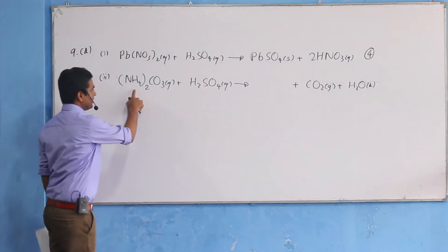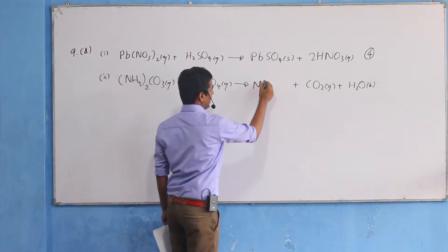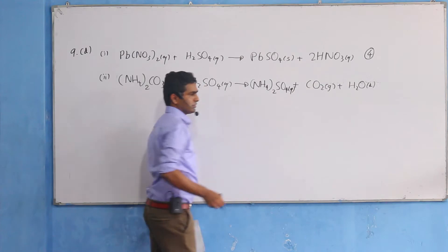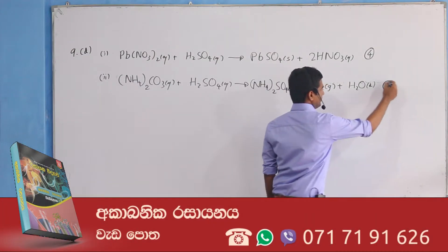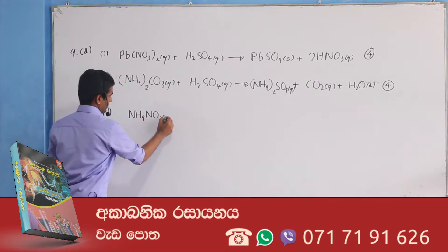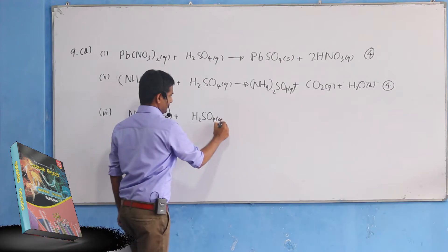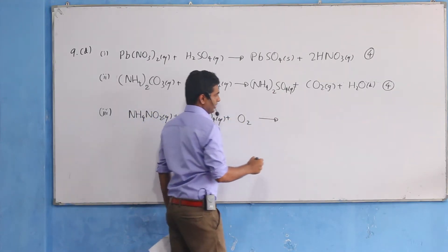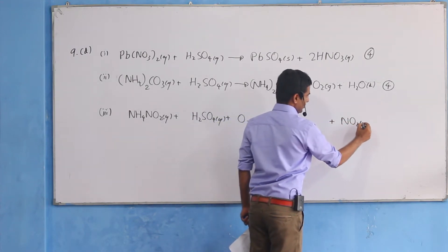Ammonium carbonate. Ammonium sulfate. Ammonium sulfate is a very small amount of sulfuric acid.